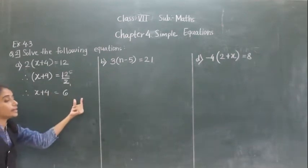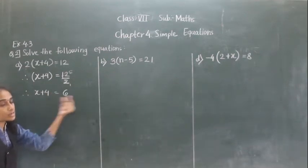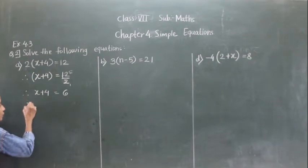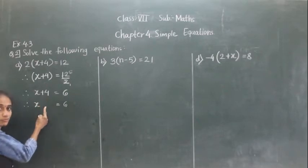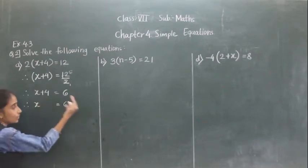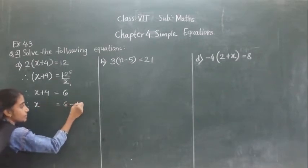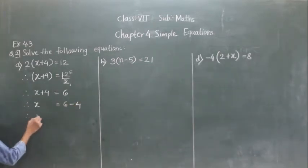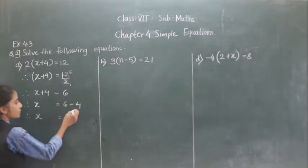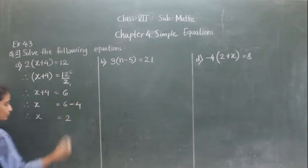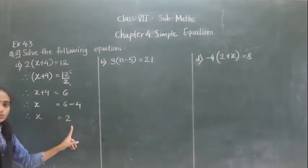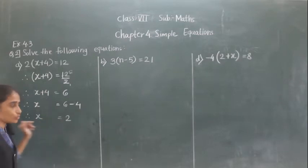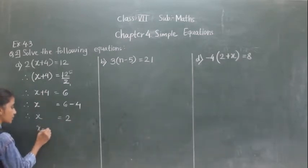If 4 comes to the right hand side, it will become subtracted. So therefore x is equal to 6 minus 4, which is 2. So x is equal to 2. That is our answer.